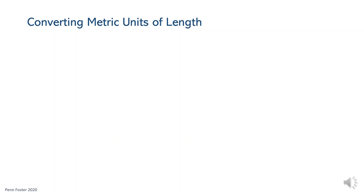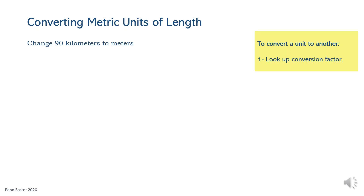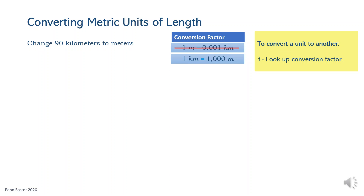To convert units to other units, two facts about the units in question must be determined before starting the calculation. First, look up the conversion factor. In the first problem, 90 kilometers are converted to meters. One conversion relation that is true is 1 meter equals one thousandth of a kilometer. It's best to avoid using conversion factors in decimal or fraction forms such as 0.001. Instead, look up the conversion relation with only whole numbers. For this problem, 1 kilometer equals 1,000 meters is the conversion relation to be used. One thousand is the conversion factor.